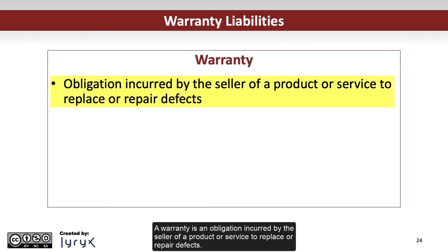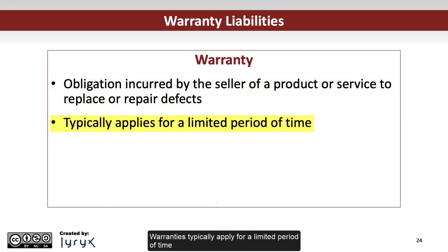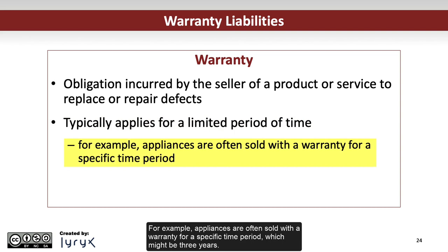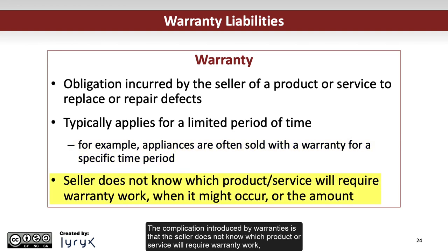A warranty is an obligation incurred by the seller of a product or service to replace or repair defects. Warranties typically apply for a limited period of time, from as short as 30 days to as long as 25 years. For example, appliances are often sold with a warranty for a specific time period, which might be 3 years. The complication introduced by warranties is that the seller does not know which product or service will require warranty work, when it might occur, or the amount — but can, based on history and some research, come up with a reasonable estimate.